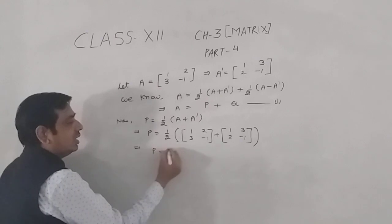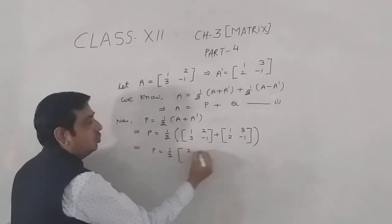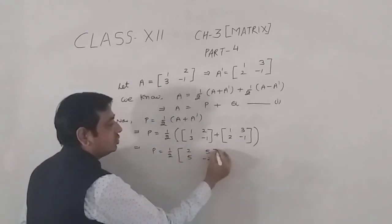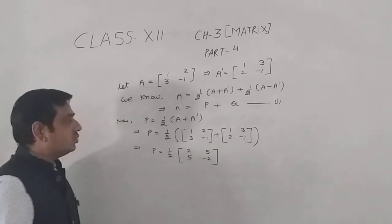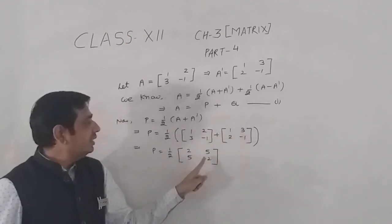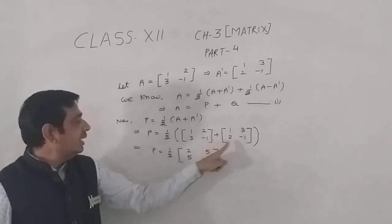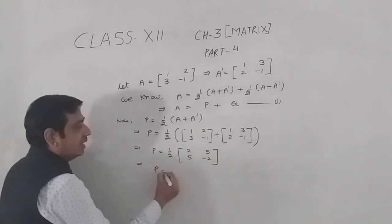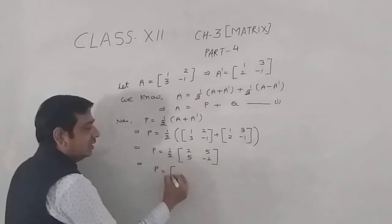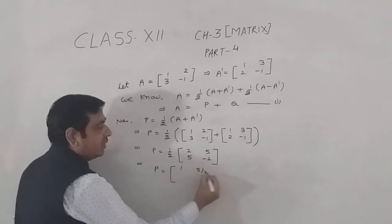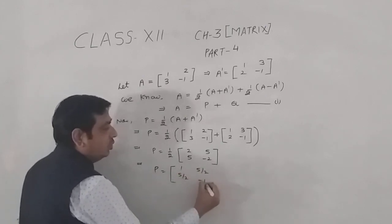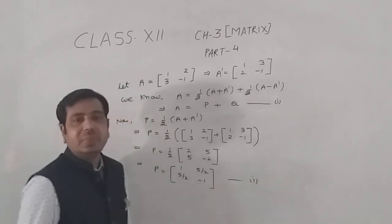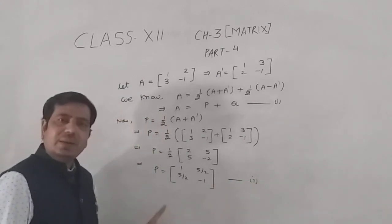Adding A and A': [1, 2; 3, -1] plus [1, 3; 2, -1] gives [2, 5; 5, -2]. Then multiplying by half: P equals [1, 5/2; 5/2, -1].